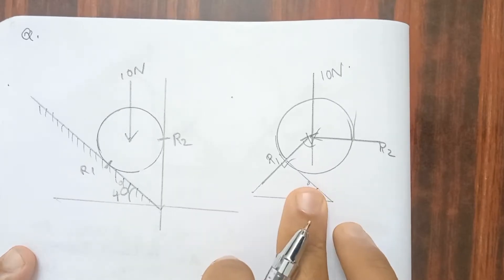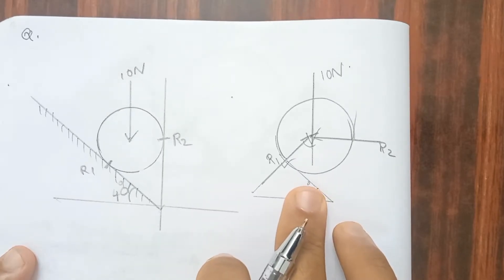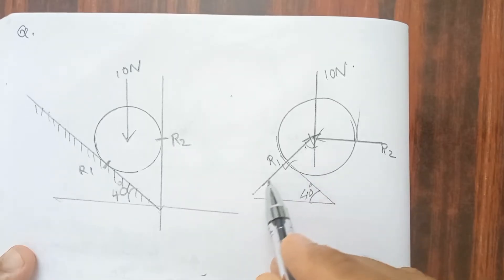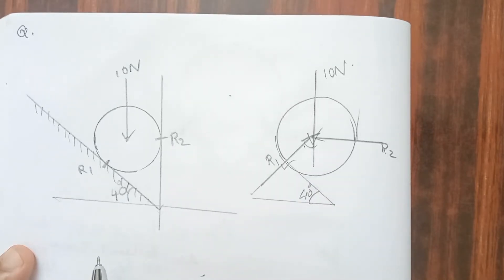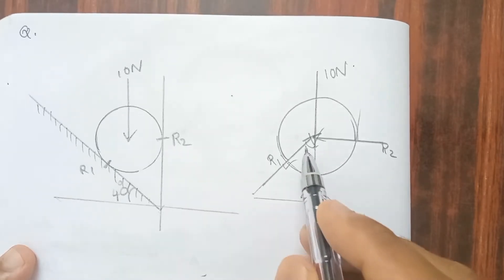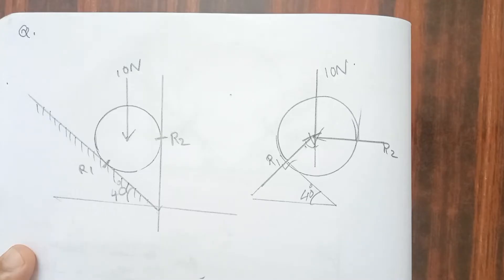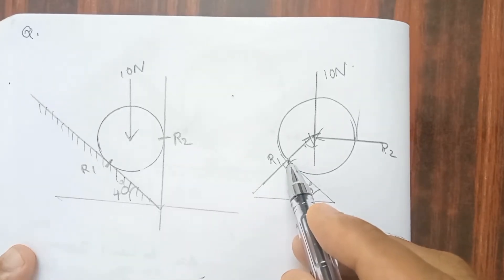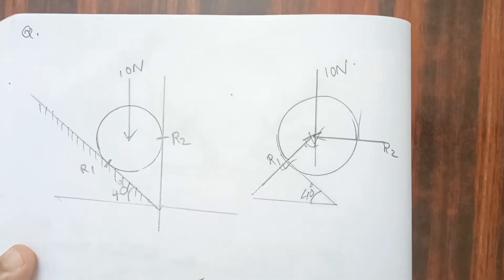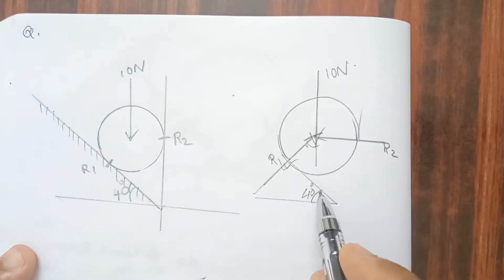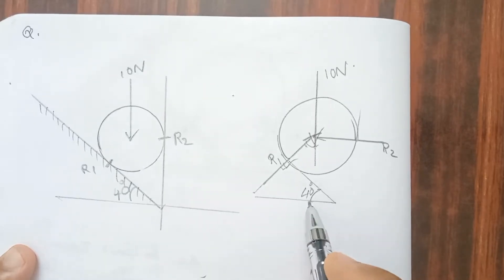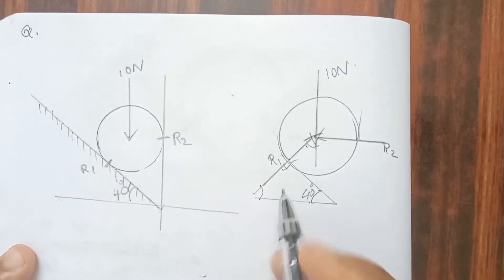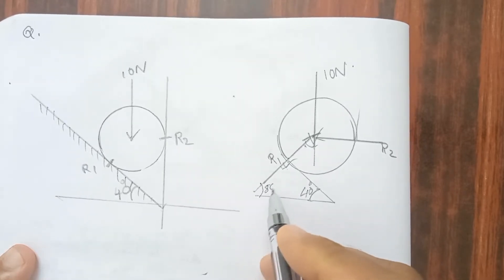This is what we are doing. Because this is an inclined force, this is a reactive force, so this is an angle. This is a reactive force. This is 90 degrees. So this angle is 40, this is 90, then it is 50 degrees.